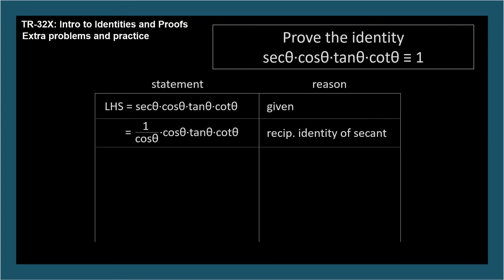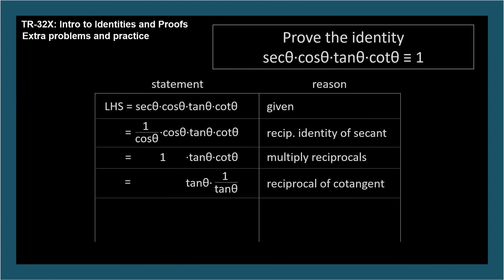Now we have an expression with 1 over cosine theta times cosine theta, which we know we can simplify to 1, so we'll write that product as 1, and we can ignore it subsequently since it's a factor in a product. So we have 1 times tangent theta times cotangent theta. We have an identity that says cotangent theta equals 1 over tangent theta, so let's make that substitution. We end up with tangent theta times 1 over tangent theta, and our reason is reciprocal of cotangent, or cotangent identity.